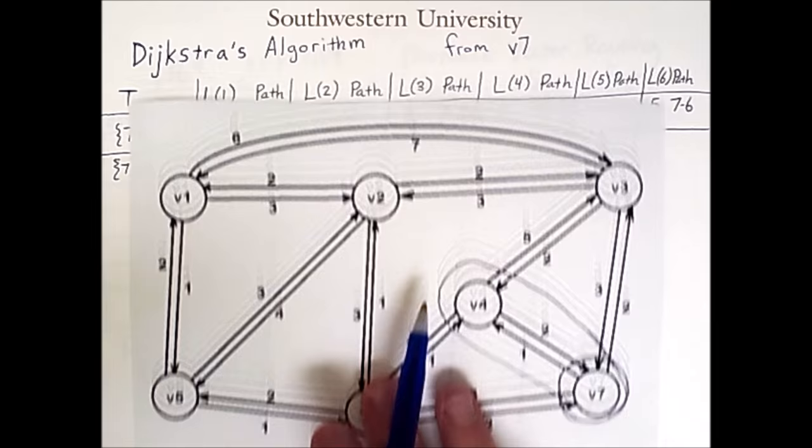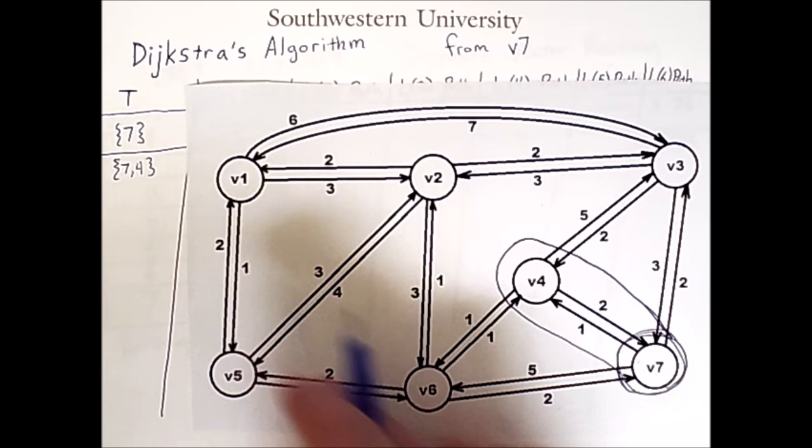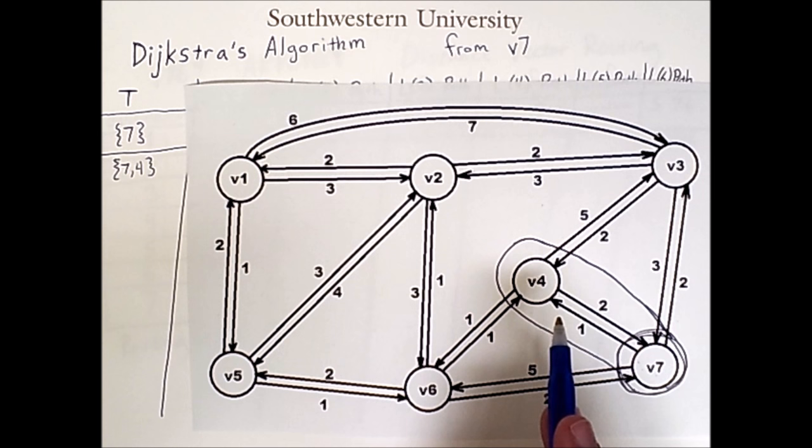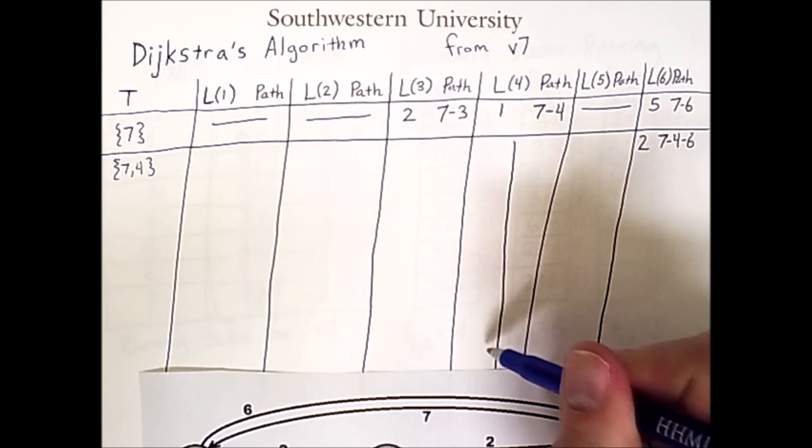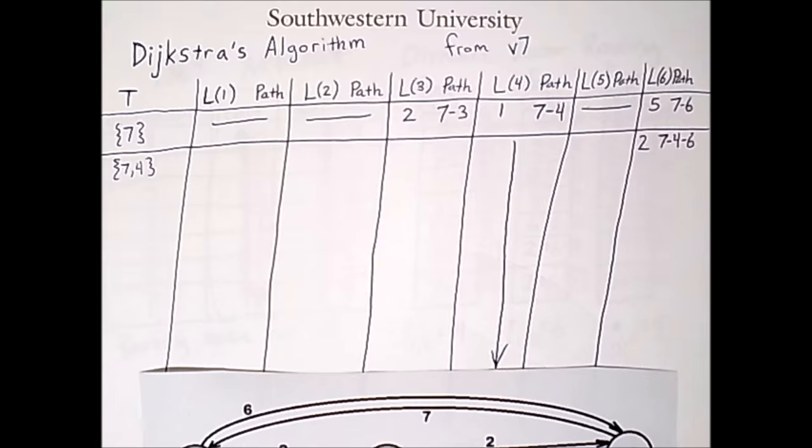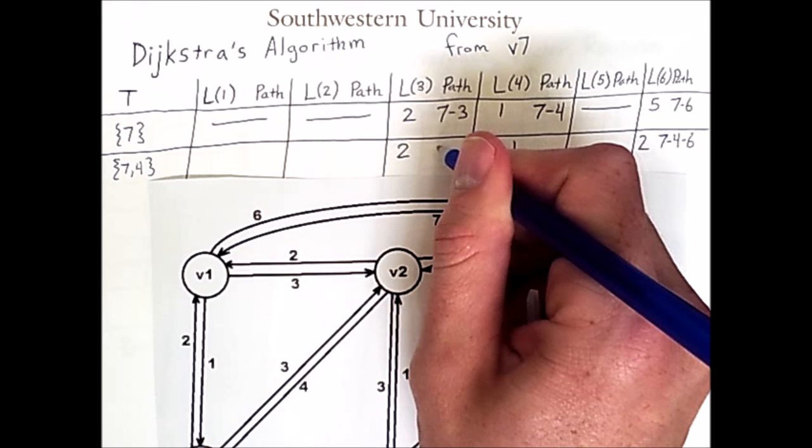Something else worth noting is that when we add vertex 4 to our set, that means that the path to vertex 4 is guaranteed to be the shortest. We've locked that path in as the shortest. So in my table, I'm going to simply draw an arrow down here indicating that we know what the shortest path is already. However, we do not know for certain yet that we've discovered the shortest path to vertex 3, so I'm going to rewrite this same cost and path in the table.